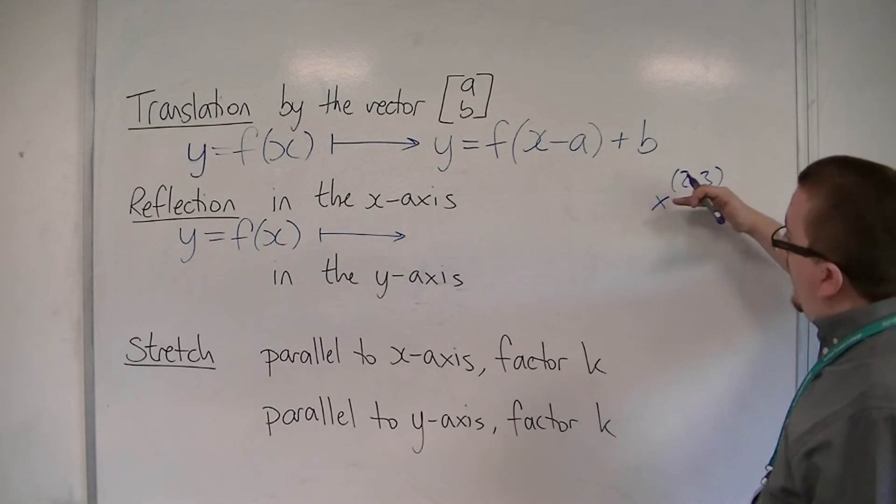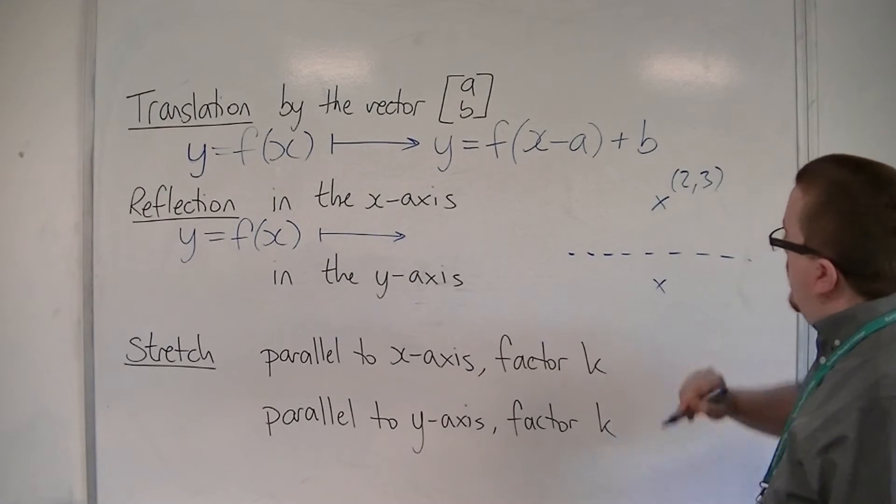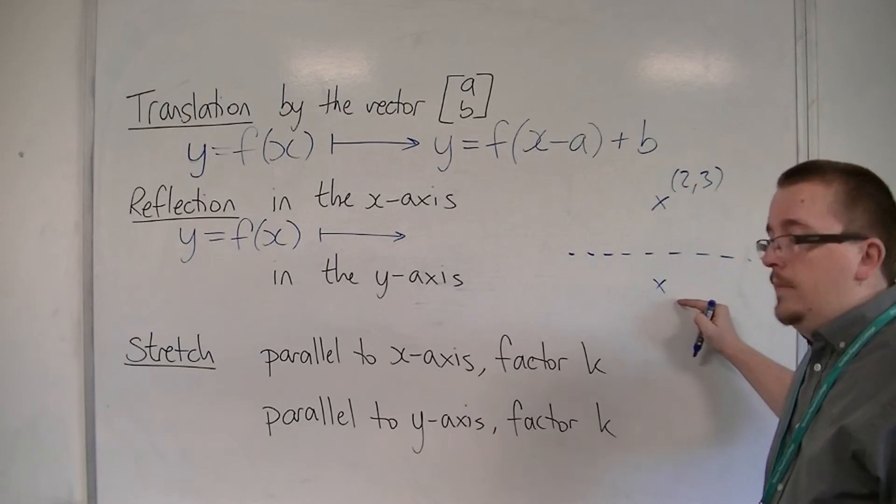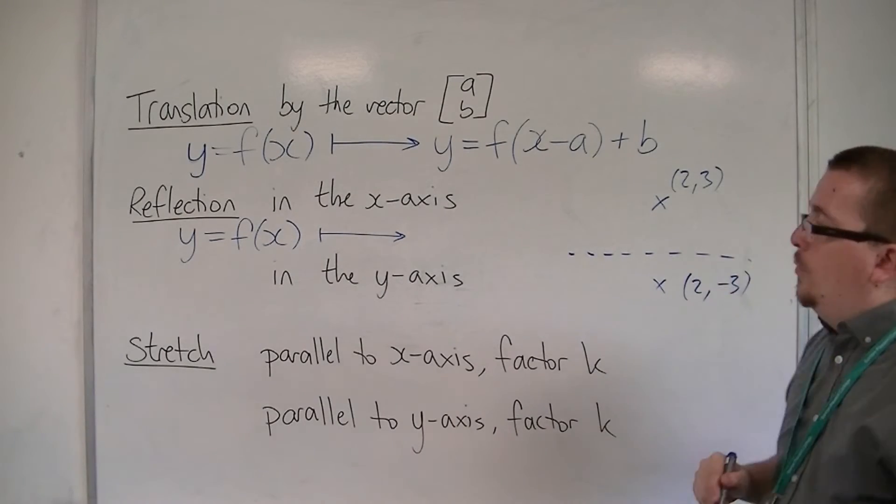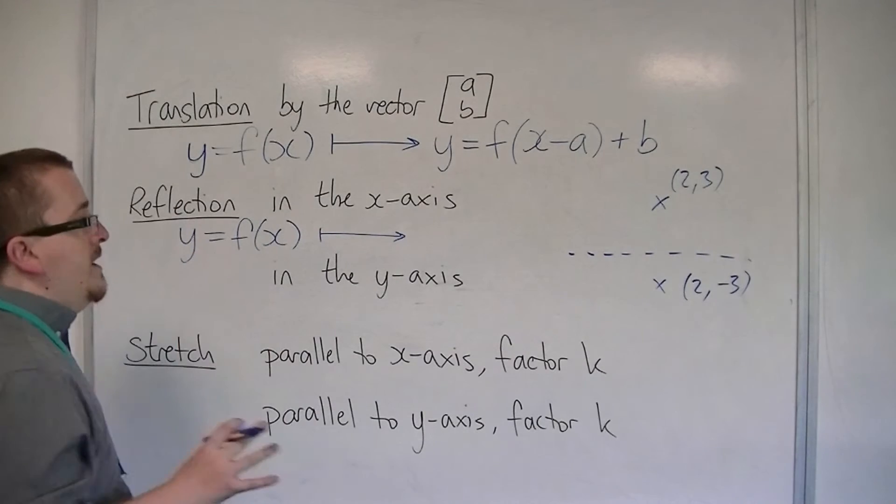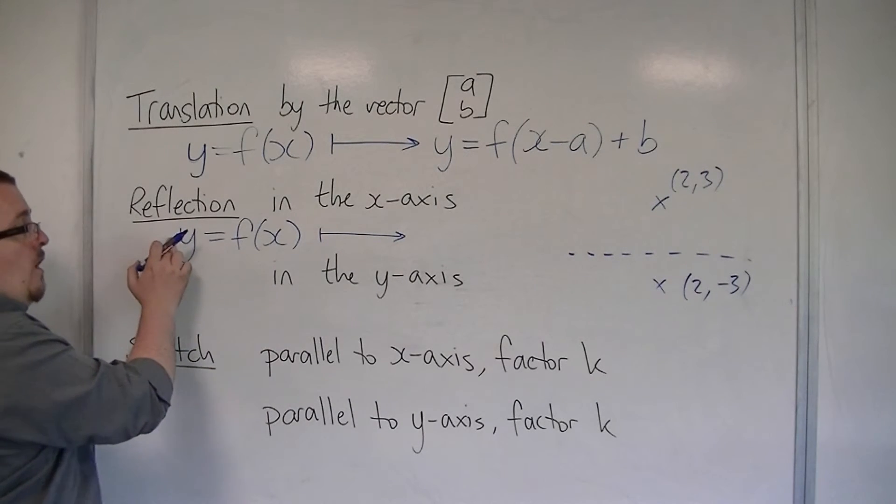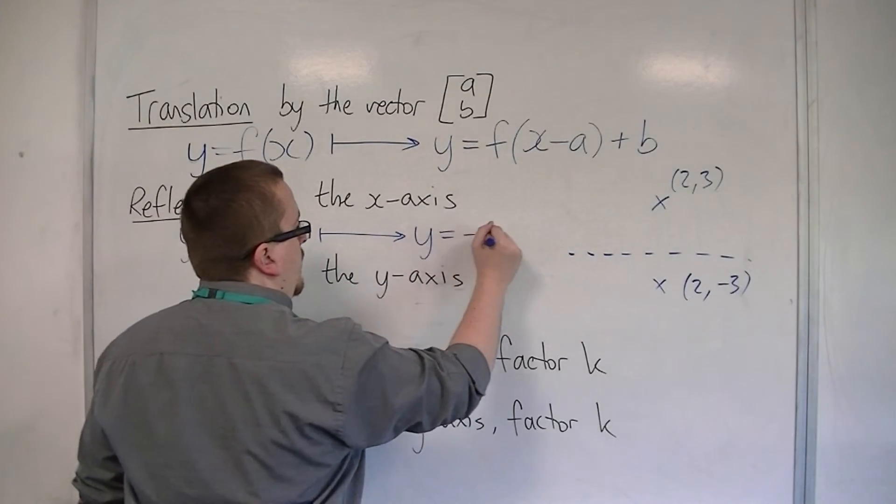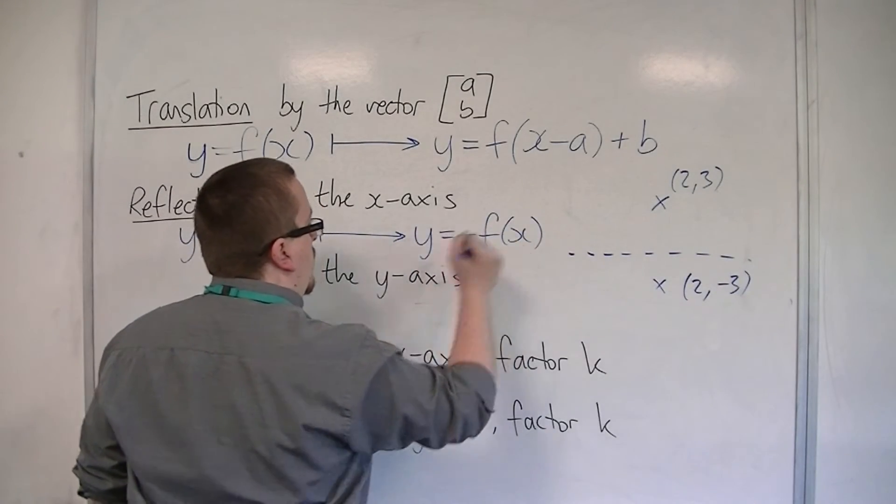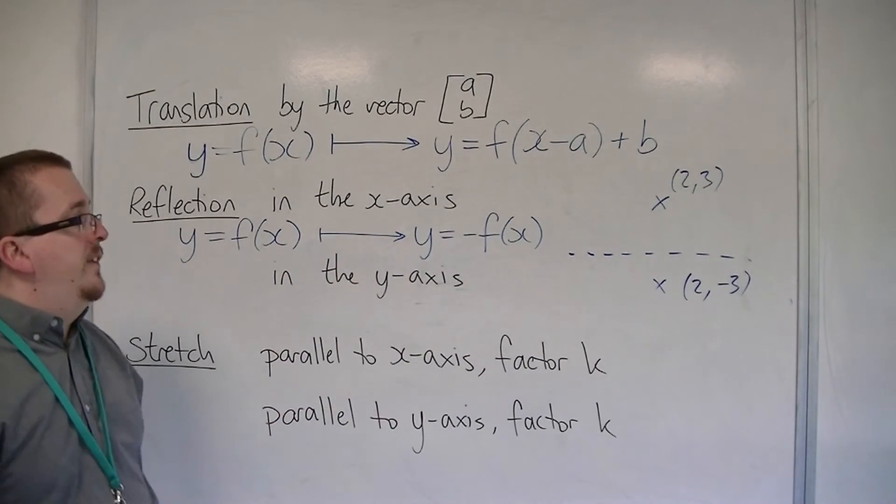then what's going to happen is the coordinate is going to appear down here. It will have the same x-coordinate, but the y-coordinate will change. And because the y-coordinate has changed, that means that the minus sign must be in front of the y, or instead in front of the f of x. So y equals f of x is mapped to y equals minus f of x in this case.